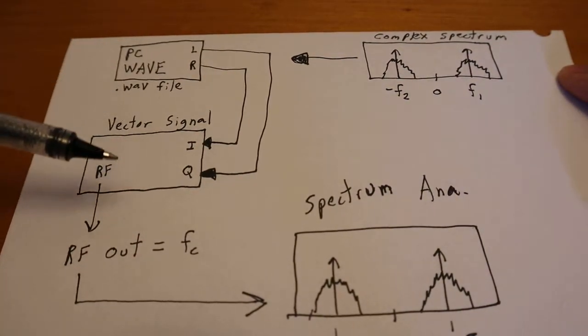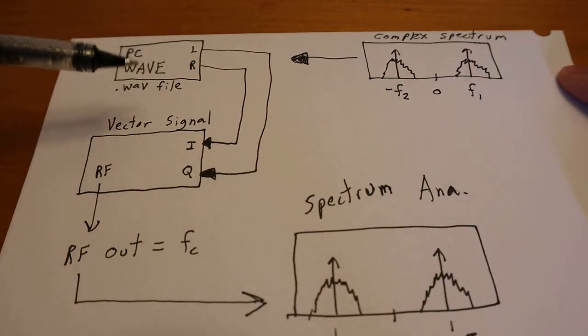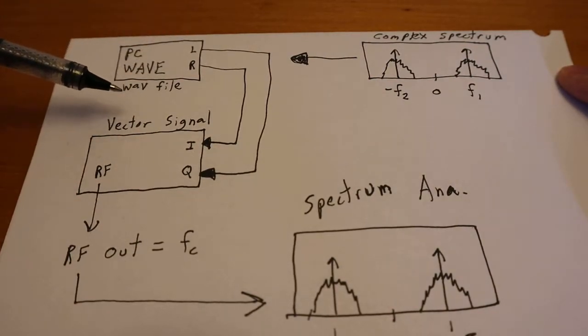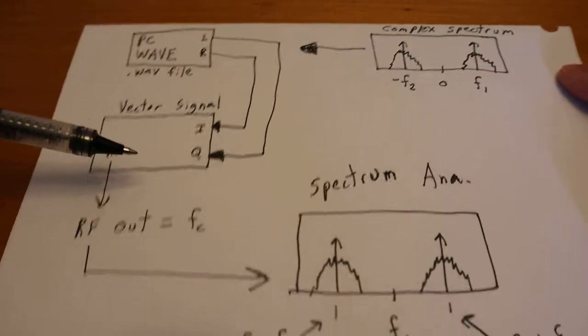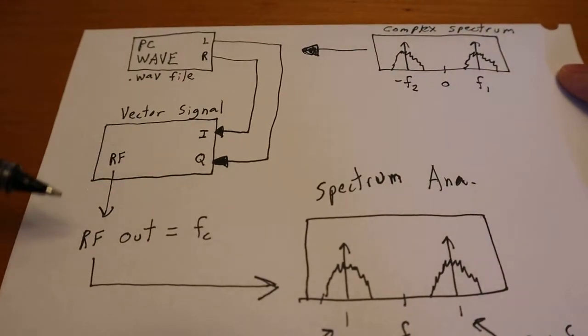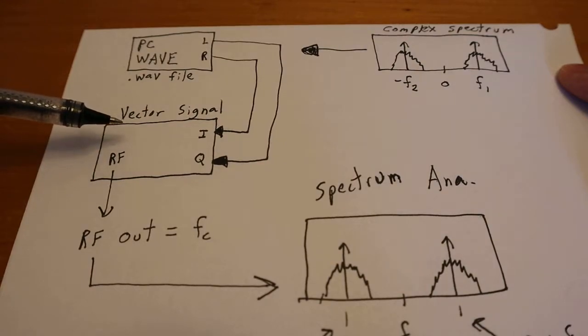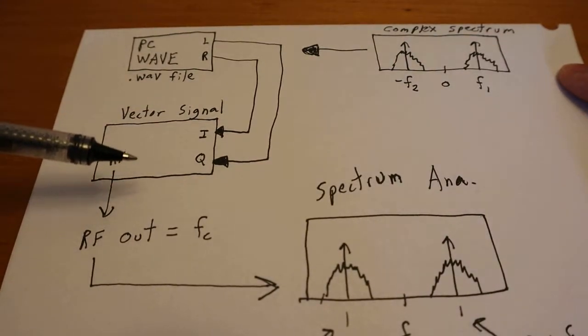I'm just kind of giving you a system-level diagram of how we can take these WAV files I was talking about and actually have them be created as RF signals by using this thing called a vector signal generator.